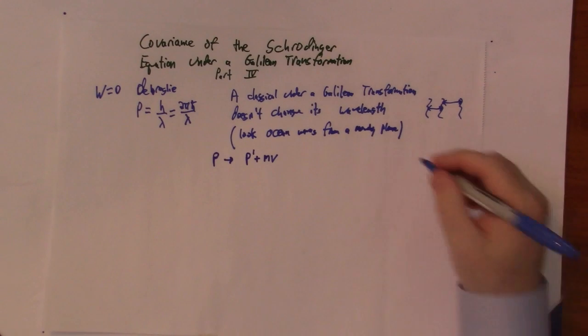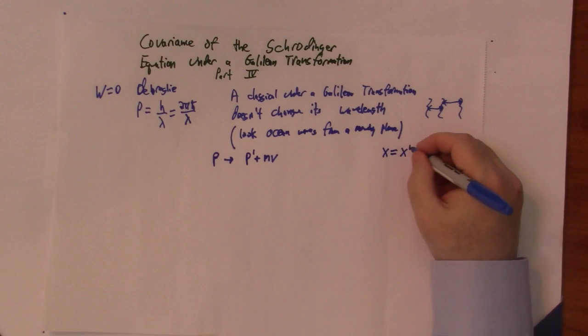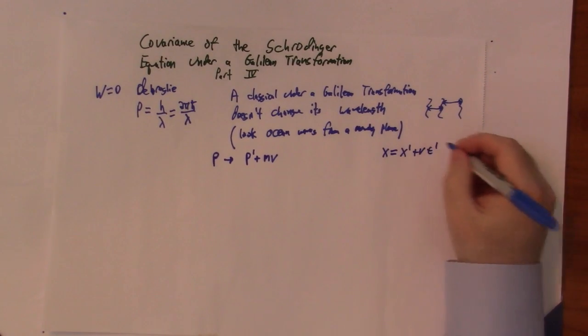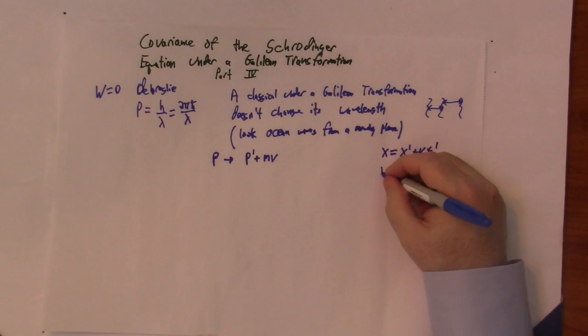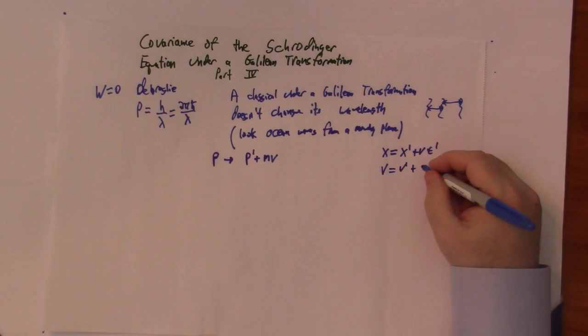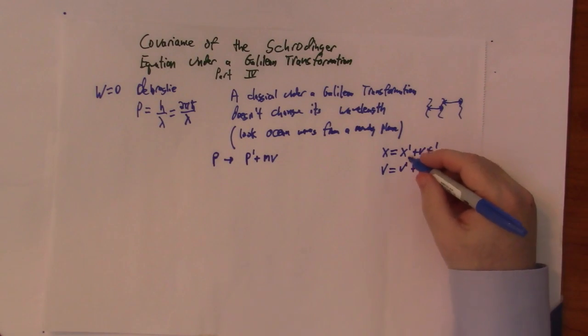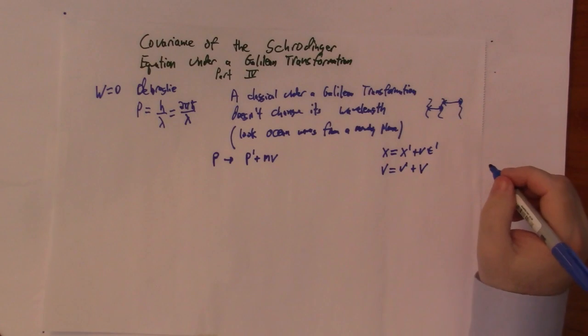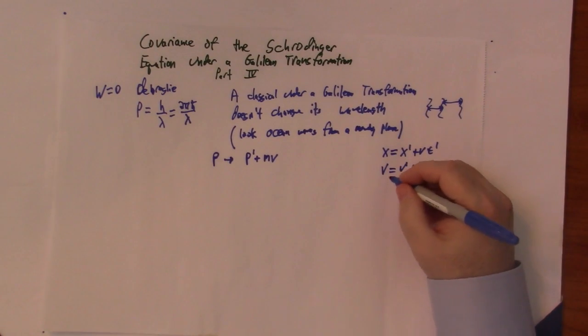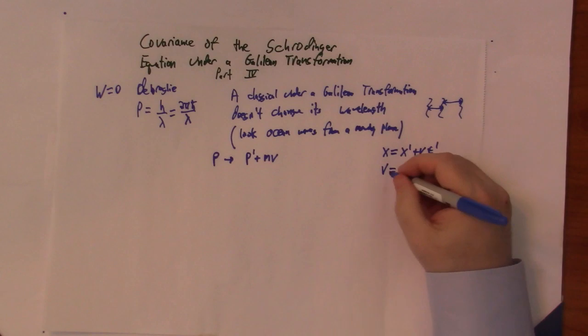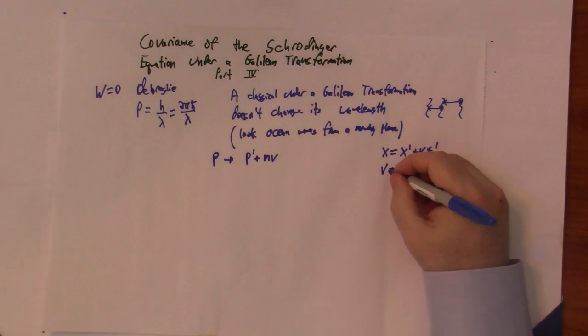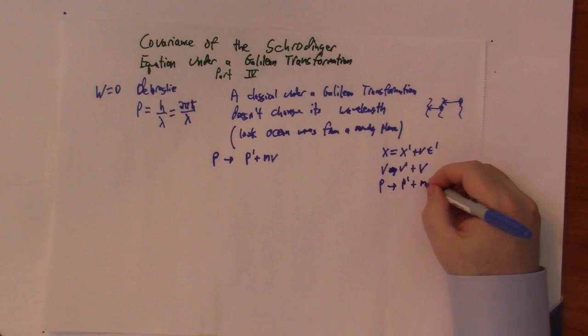Easiest way to see that is, again, go back to the original Galilean transformation, x equal x prime plus vt prime, and simply differentiate with respect to time. You get v equal v prime plus v, or p goes to p prime plus mv.